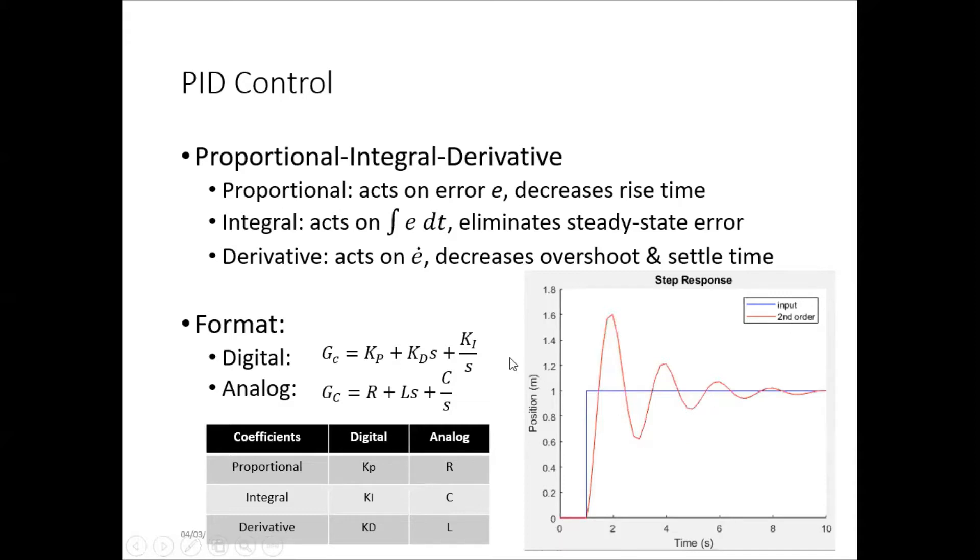So, generally, you want the derivative constant to be about 10% of the proportional constant. That tends to keep your system stable.